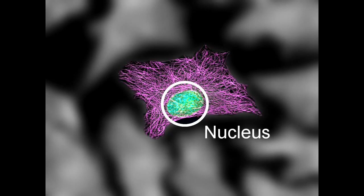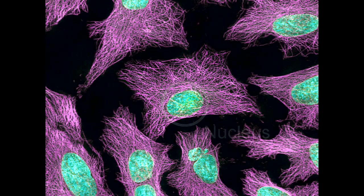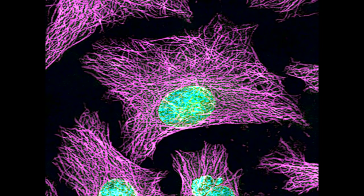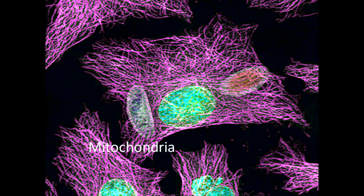But microtubules aren't just there to provide structure for the cell — this network also functions as a transport system. Remember that although they're not shown, the cell is also full of organelles and molecules, all with a job to do. Some structures within the cell need to move around to complete their function. For example, the Golgi apparatus packages proteins and other molecules for export out of the cell.